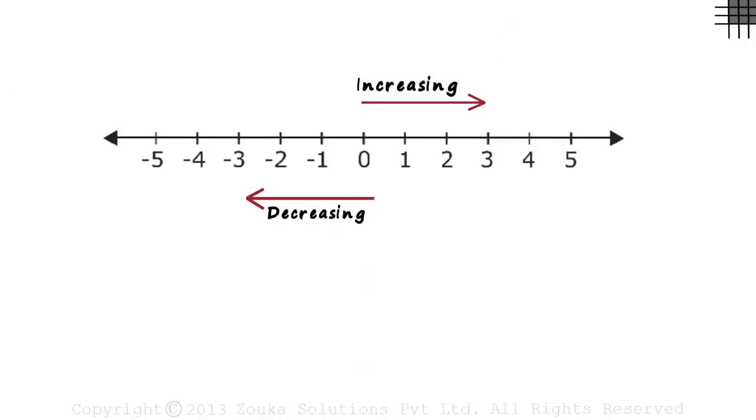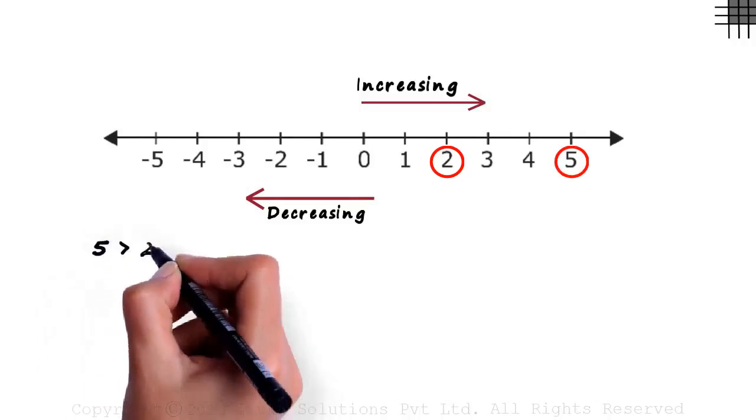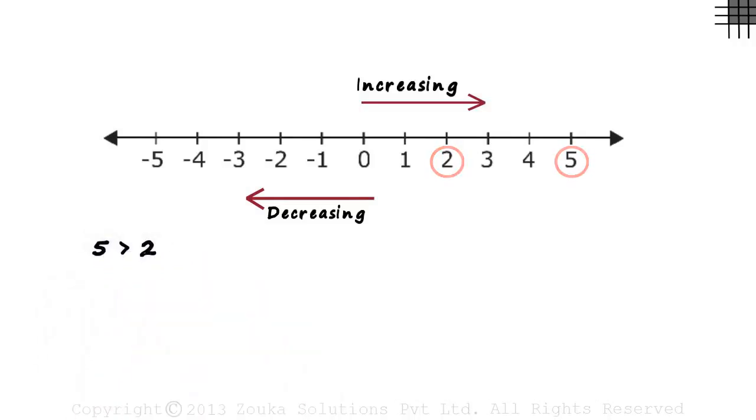Consider any random number, say 2. Now choose any number towards right. Say 5. 5 is greater than 2. Now choose another number. Say 4. Even 4 is greater than 2.